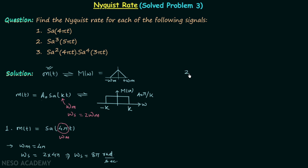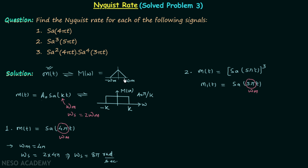For the second signal, m(t) = sinc³(5πt). First we calculate the Nyquist rate of sinc(5πt): let m₁(t) = sinc(5πt). Comparing with the standard sampling function, 5π is the maximum frequency component ωm. So ωs1 equals 2 times 5π, giving ωs1 equal to 10π radians per second.